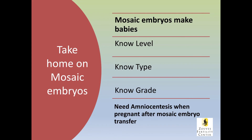The take-home is that mosaic embryos definitely make babies. You want to know the level of your mosaic embryo, the type, and the grade. We can then plug that into the table and work out the probability that that mosaic embryo will translate into a baby. One caveat: you definitely need to do amniocentesis when you are pregnant after transferring a mosaic embryo, because of the very small chance that the mosaicism or the abnormal line of cells persists in the baby.